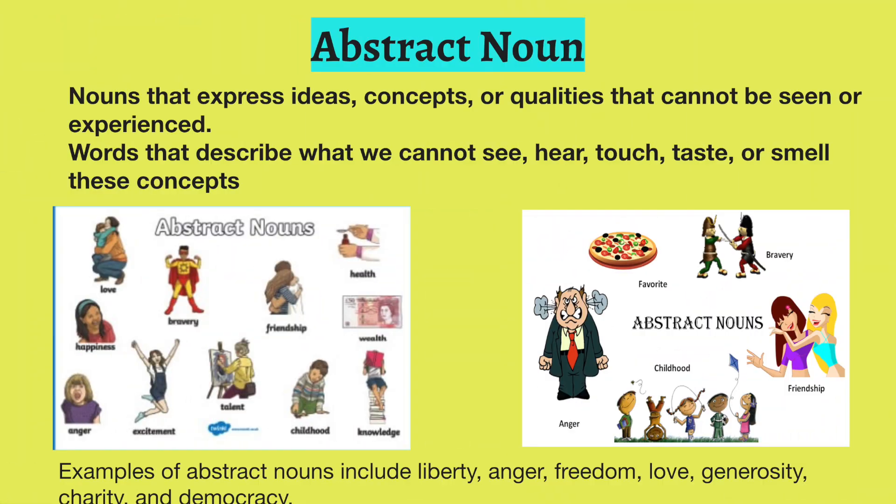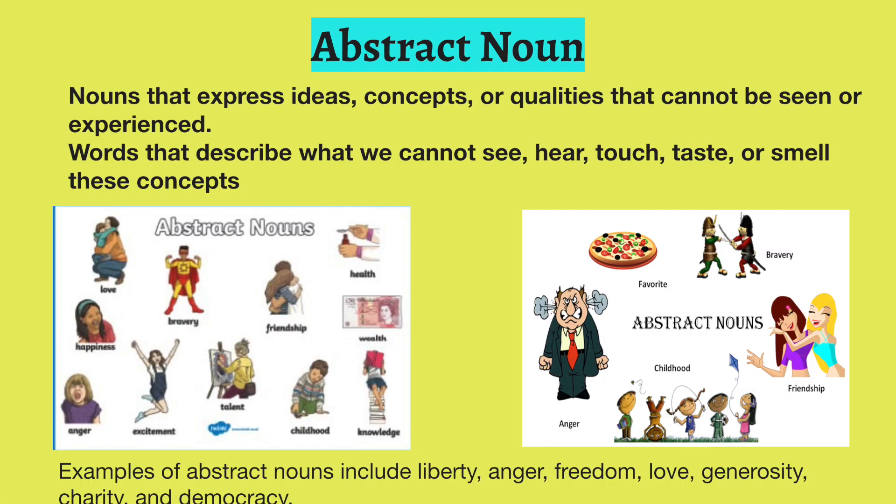Next, abstract nouns. Abstract nouns are words that express ideas, concepts — anything that one cannot see, touch, taste, or smell. It is a feeling or a sense of experience. Look at the screen and follow the examples: love, bravery, friendship, wealth, wisdom, courage, favorite, anger. These are all examples of abstract nouns.